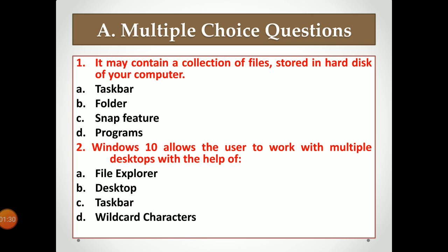Second question: Windows 10 allows the user to work with multiple desktops — meaning more than one desktop can be open on your screen at one time. Which option or feature allows us to do that? Options are: A is File Explorer, B is Desktop, C is Taskbar, and D is Wildcard Character. Write down if you know the answer.